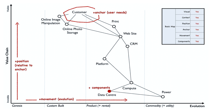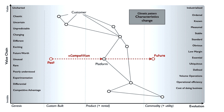The components continuously move from left to right on the evolution axis, driven by market forces. One aspect I want to highlight is this aspect of movement — the fact that components change as they evolve towards commodity and utility. Take note of the characteristics on the genesis side versus the commodity side: on the left we have uncertain, unpredictable, poorly understood, competitive advantage. On the right we have ordered, known, stable, obvious, operational efficiency, cost of doing business.